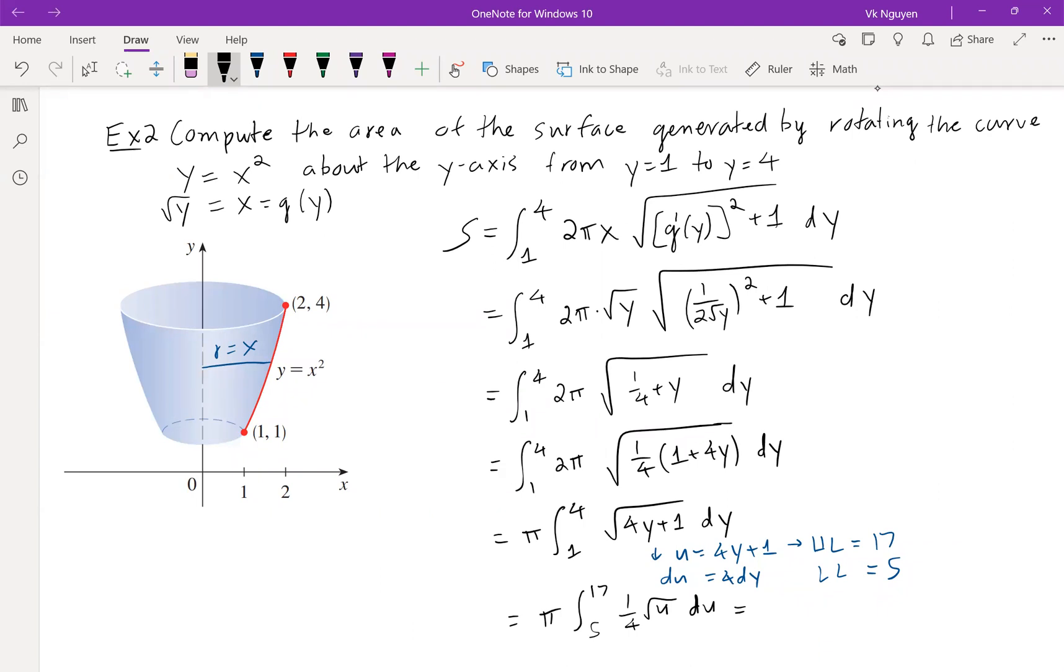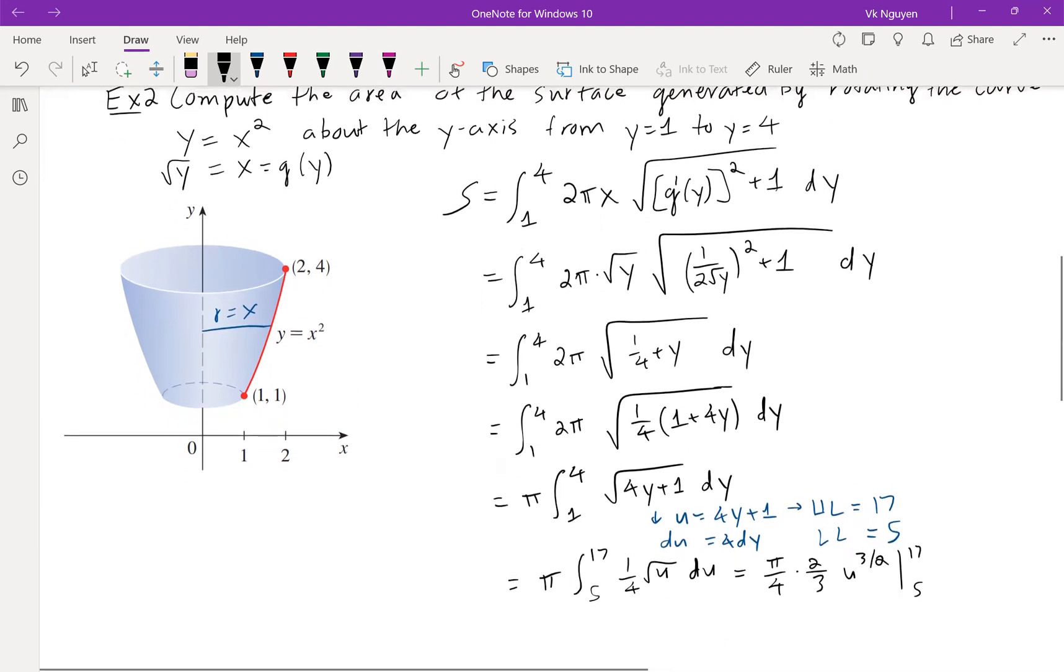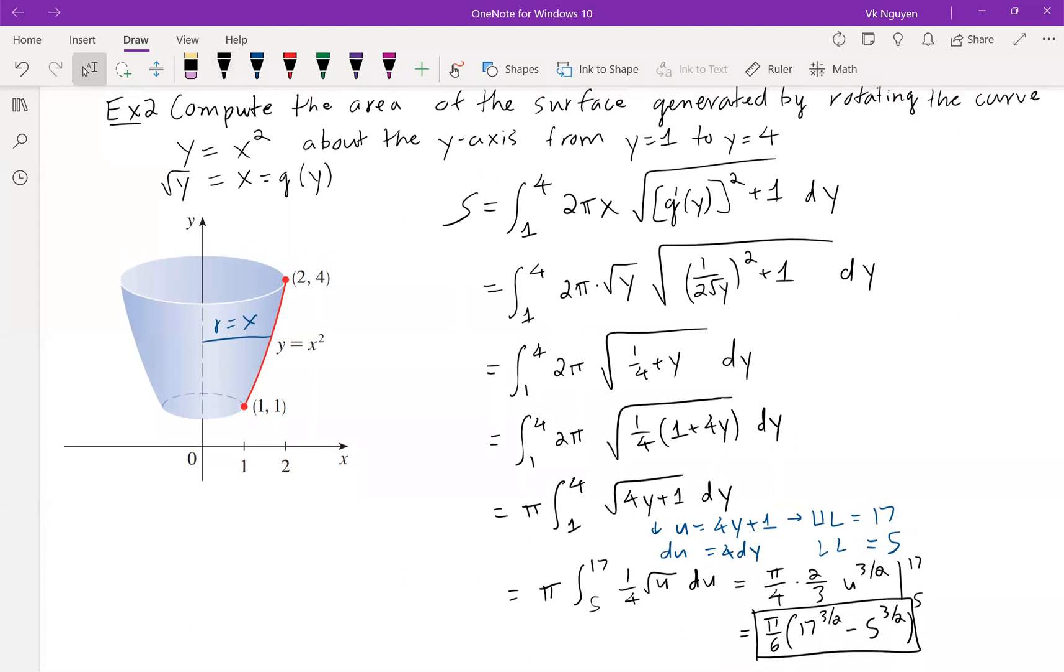And we know the antiderivative of root u. There's going to be pi over 4, multiply 2 over 3, u to the 3 over 2, evaluate this one from 5 to 17. Pi over 6, 17 to the 3 over 2 minus 5 to the power of 3 over 2. And that is it. One more example.